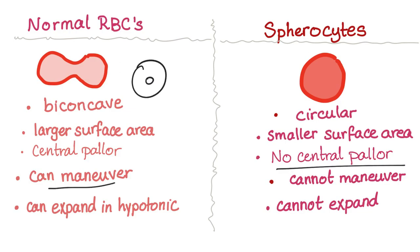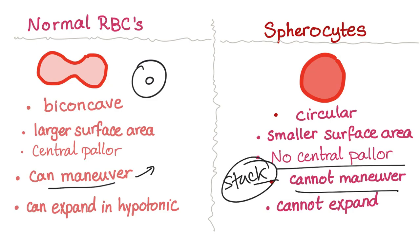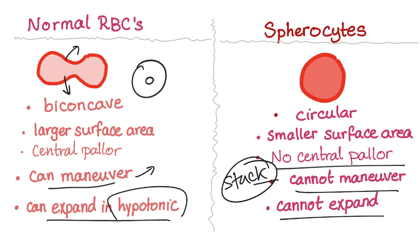The normal bi-concave red blood cell can maneuver through the splenic sinusoids. The spherocyte cannot maneuver — it gets stuck, and the splenic macrophage may consume it. The normal cell can also expand in a hypotonic solution because of its bi-concave disc shape. The spherocyte cannot expand in a hypotonic solution, so it will burst, leading to hemolysis.